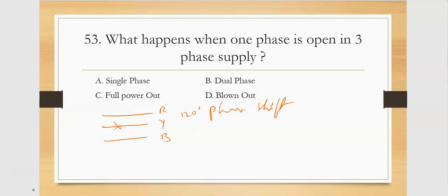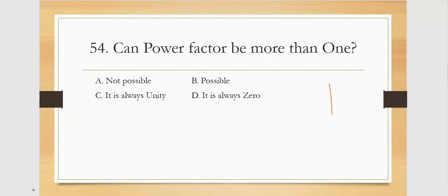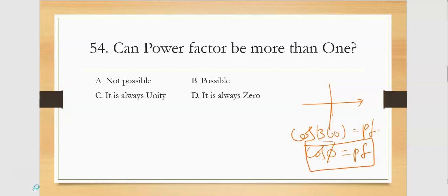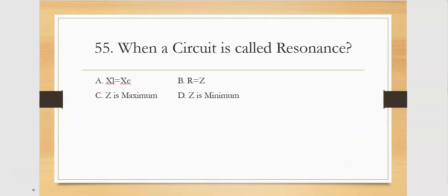Can the power factor be more than one? In a power factor triangle, the power factor can never exceed one. Power factor equals cos φ. Since the cosine of any angle between 0 and 360 degrees can never exceed one, the power factor is always less than or equal to 1 and greater than or equal to 0. So it is not possible — that is the right answer.